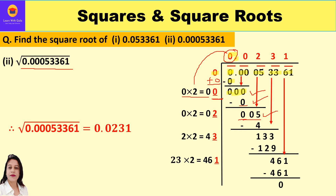Bring down the next period 05, so the dividend is 5. For the divisor, the current quotient is 000, which is 0; doubling gives 0. Leave a blank. We need a digit such that the product is less than or equal to 5. We keep 2: 2 × 2 = 4, which is less than 5. So 5 − 4 = 1.